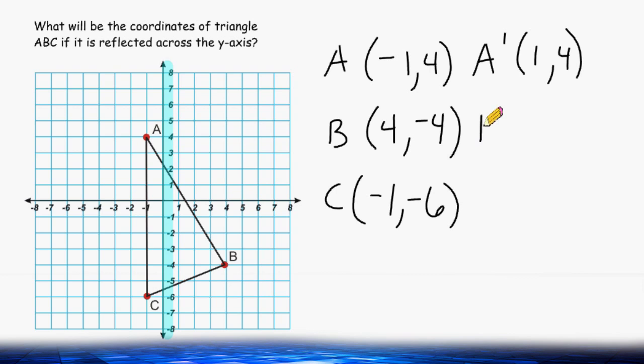For point B, the opposite of positive 4 is negative 4. And the second value, or the y value, will remain the same.